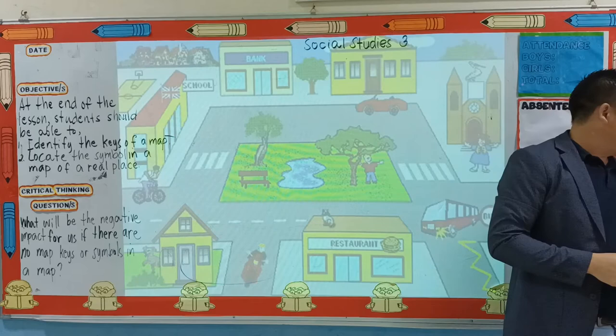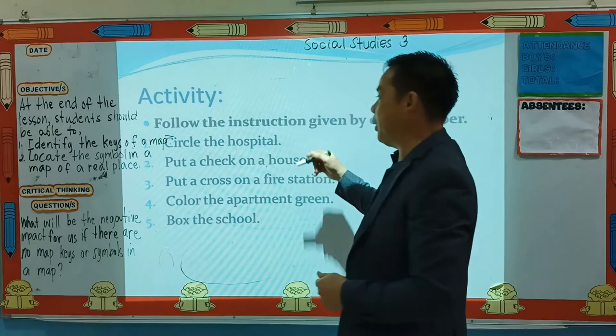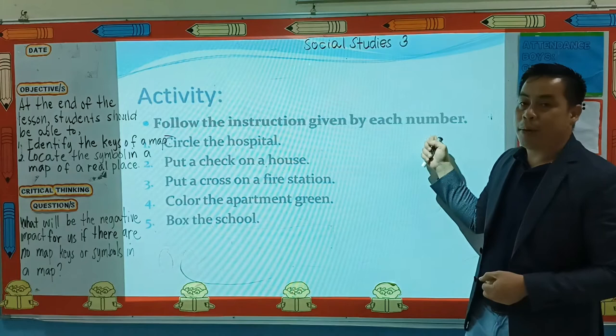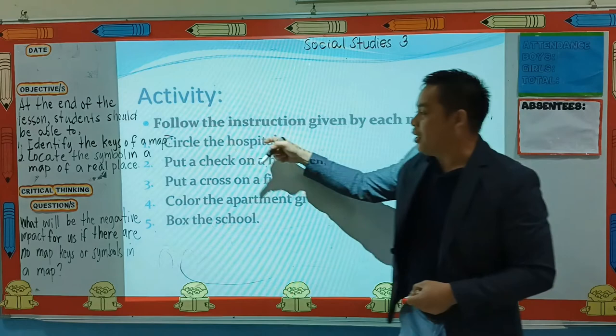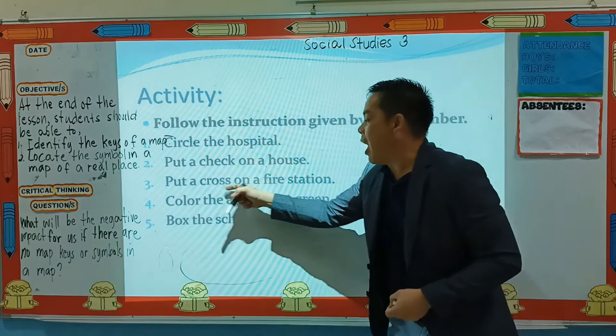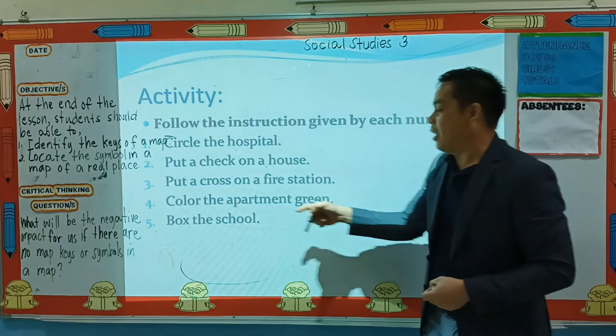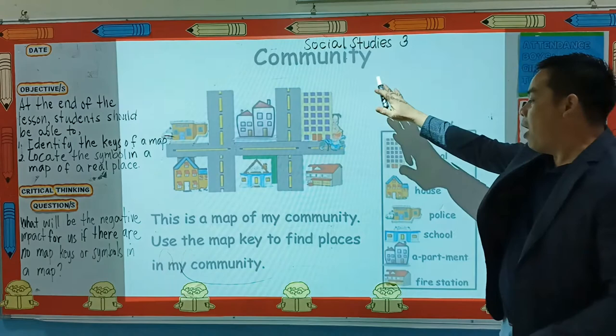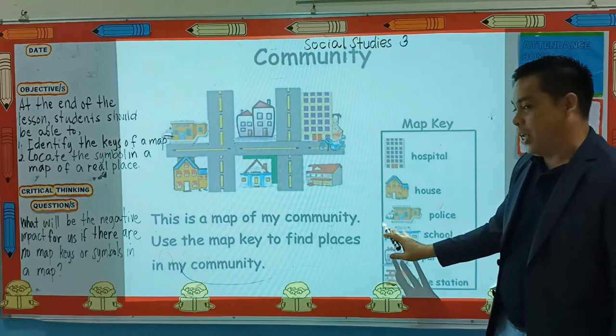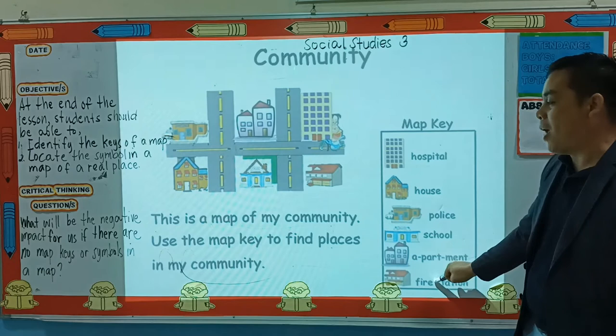Let's proceed, children, to our activity for today's lesson. Follow the instructions given by each number. Please be ready with your activity sheet. Follow the instruction given by each number: circle the hospital, put a check on the house, put a cross on the fire station, color the apartment green, and box the school. So this is your activity sheet - this is an example of a community map. All you have to do is use the map key to find places in my community.